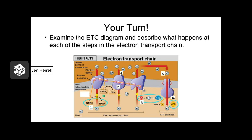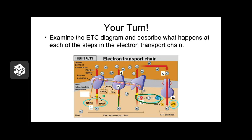I'd like you to complete this 'your turn' before you come to class. You're going to examine the diagram of the electron transport chain and describe what you see happening at each step. In part one, describe what's happening at this reaction. In part two, describe what's happening with these circles passing through the large purple blobs. In part three, describe this reaction. In part four, describe the red and yellow arrows going up. In part five, describe the large red arrow coming down. In part six, describe what's happening with the reaction at the end.